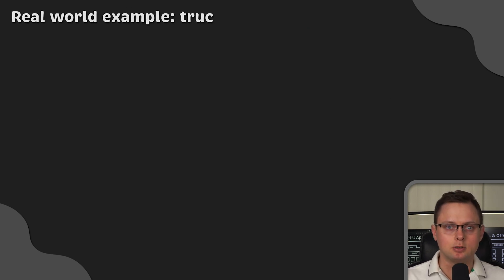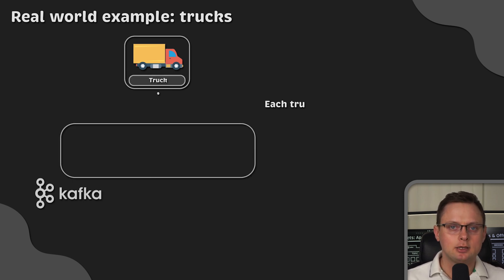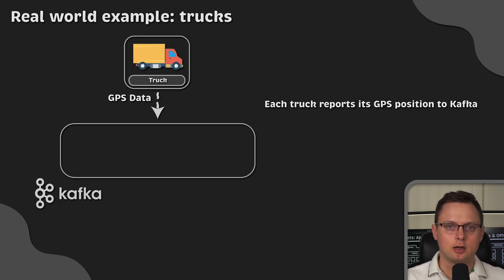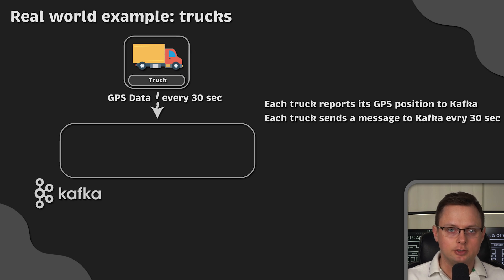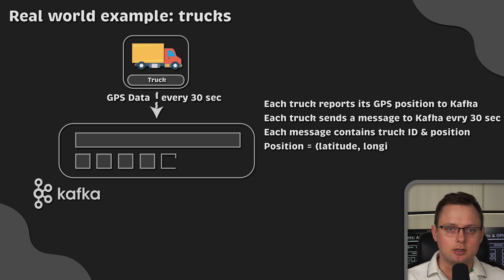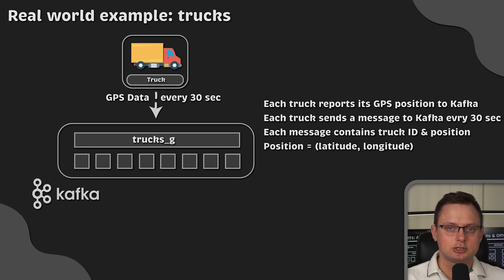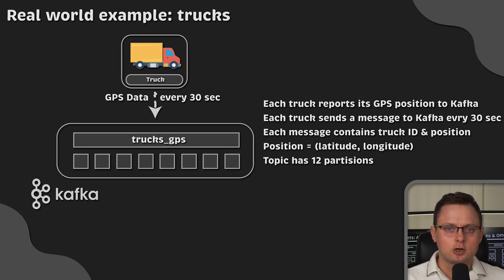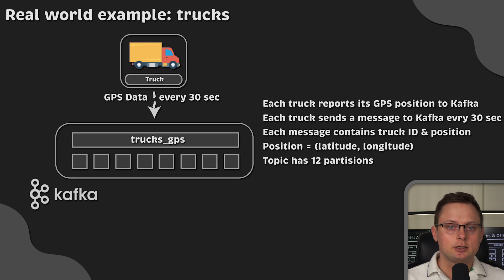Let's take a look at a real-world example. Let's say a company has a fleet of trucks. Each truck has a GPS module and reports its location to Apache Kafka every 30 seconds. Each message contains information such as the truck's ID and position. We have a bunch of trucks acting as data producers — they will send data into Apache Kafka, specifically to a truck GPS topic. This topic contains the location details of all the trucks. For this example, we decided to create 12 partitions, which is an arbitrary number — we'll talk more about how to decide the number of partitions needed at a later point.